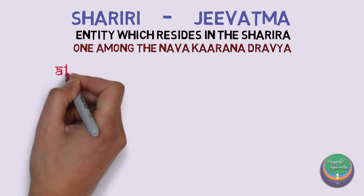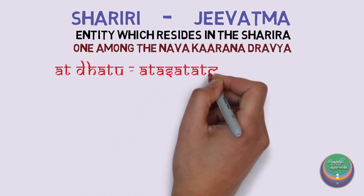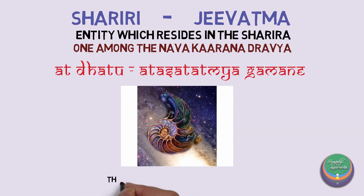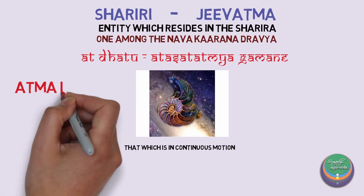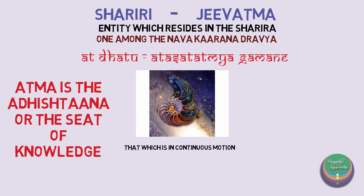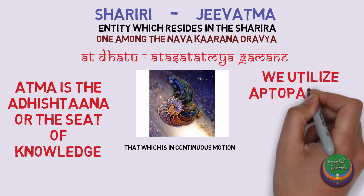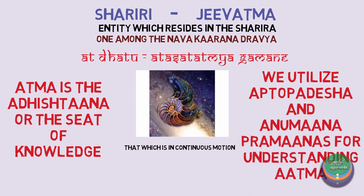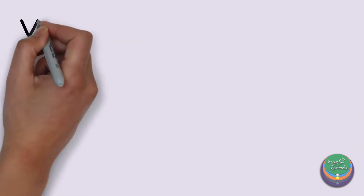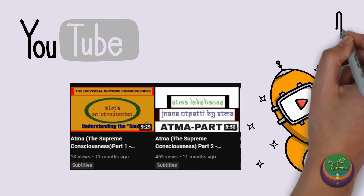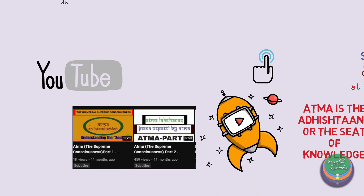The word Atma is derived as: At dhatu — atasatatmya gamane — that which has continuous motion is called as Atma. Atma is the Adhishtana or the seat of knowledge, that is, Jnana. Atma, though it is a Dravya, cannot be perceived through the Pancha Jnanendriya, but Aapthopadesha and Anumana Pramanas prove the existence of Atma. Do watch our video on Atma to learn in detail about the concepts of Shariri.